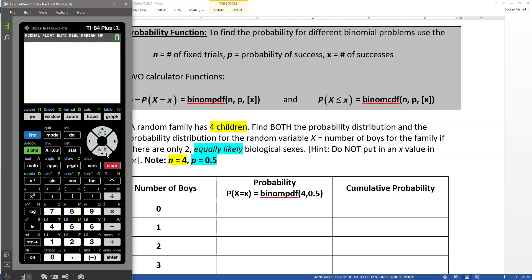So where is all this binom stuff anyway? Binom is in the distributions menu. So it's above your VARS button. So you hit second, VARS, and then it's down towards the bottom. In my calculator, it's letter A for binom PDF. It might be in a different place in your calculator. So kind of scroll through until you find it. So I have binom PDF.